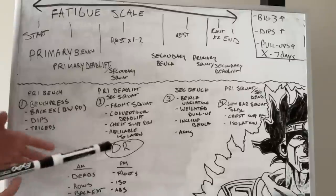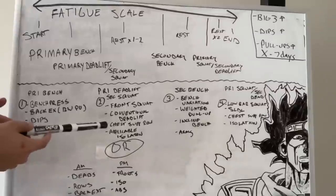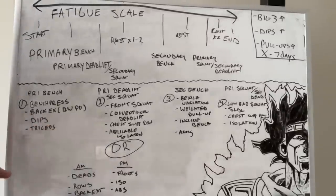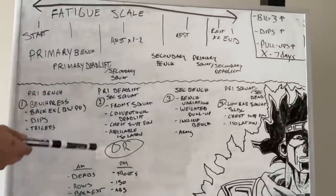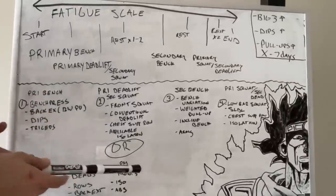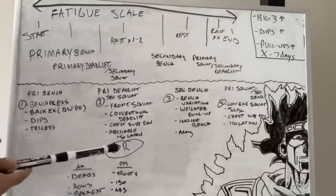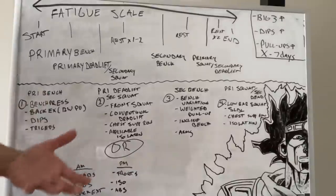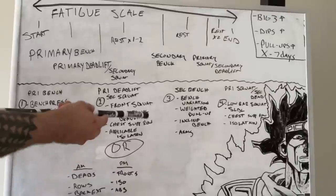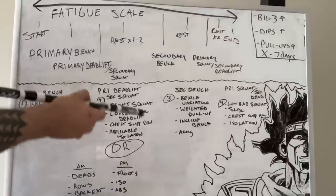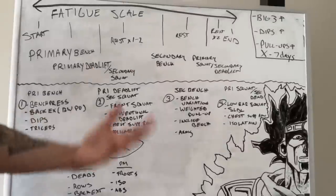If you're new, you could put any one of those isolations in this slot because you're building your foundation. For people at a higher strength level, you can also split your sessions into AM and PM, which is realistically what I do. In my AM session I'll have conventional deadlifts and back work, then I'll save the front squats, isolation, and abs for the PM session.